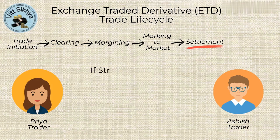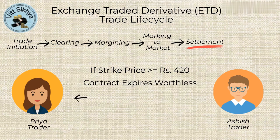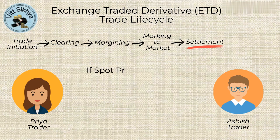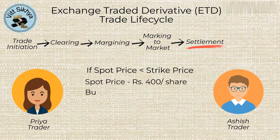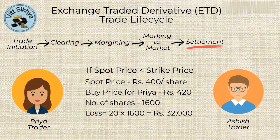If the price of ITC stock remains above the strike price of Rs. 420, Priya's option will expire worthless and Priya will get to keep the Rs. 1440 as premium received from selling the option. However, if the price of ITC stock drops below the strike price, Ashish will exercise his option and Priya will be obligated to buy 1600 shares of ITC stock at the strike price of Rs. 420 per share. If the price of ITC stock drops to Rs. 400 per share, Priya will have to buy 1600 shares at Rs. 420 per share, resulting in a loss of Rs. 32,000.